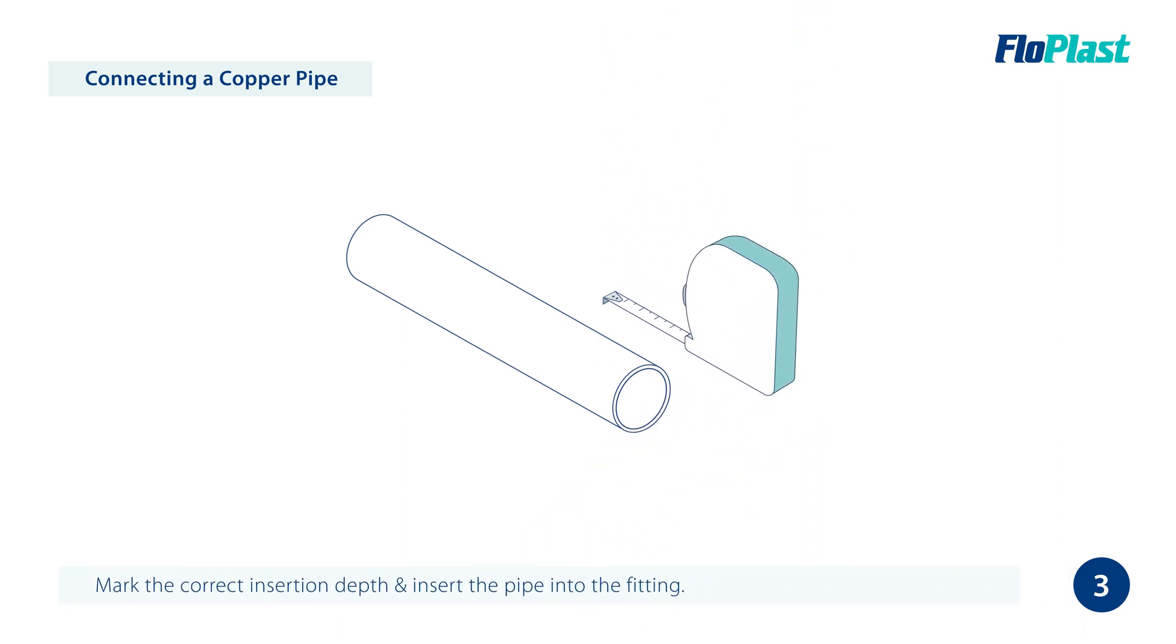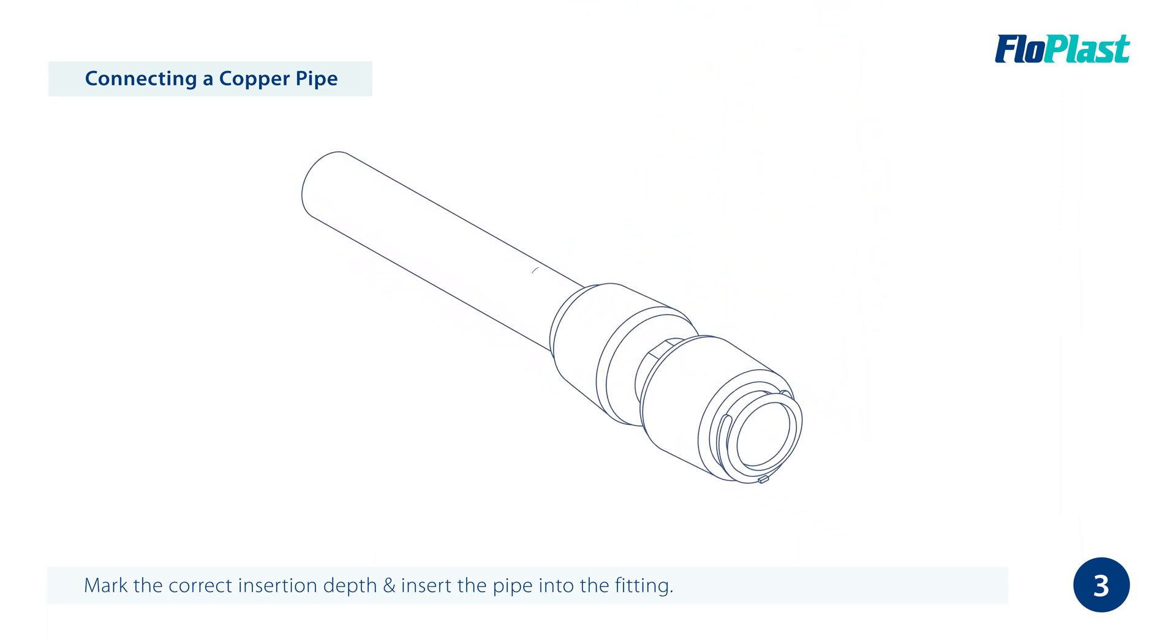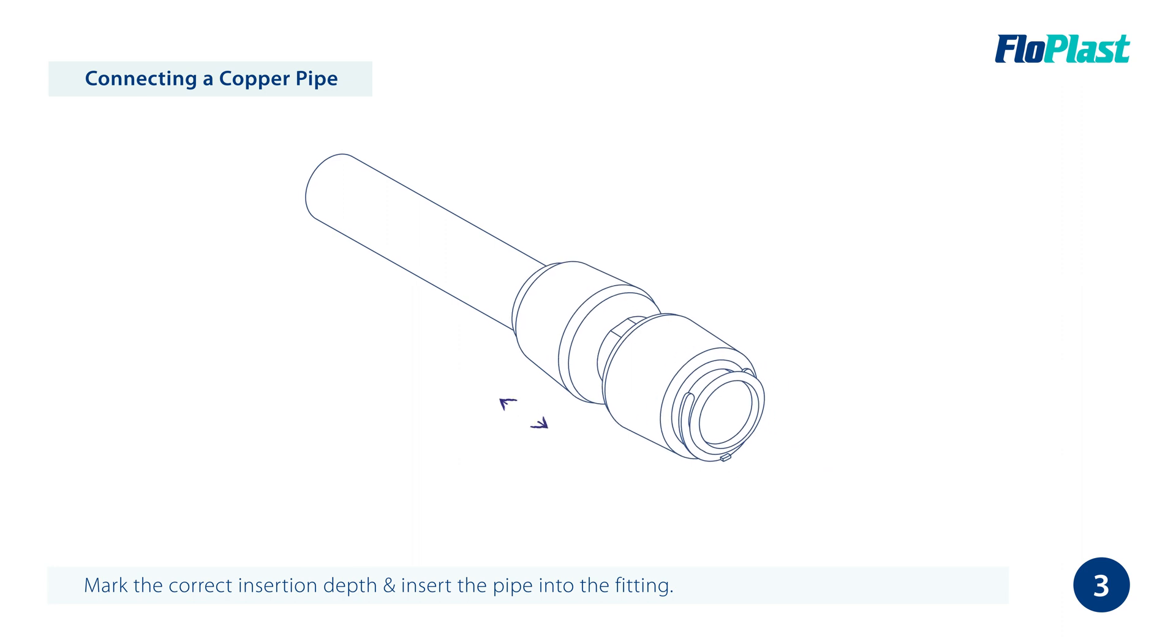After marking the pipe with the correct insertion depth, insert the pipe into the fitting. Ensure it passes through the o-ring until it reaches the stop point and correct insertion depth. Check the assembly is secure by pulling the pipe away from the fitting.